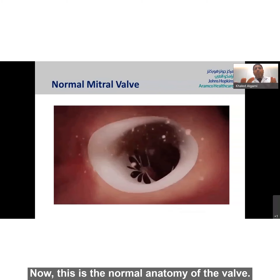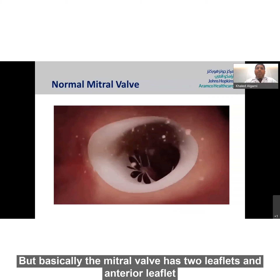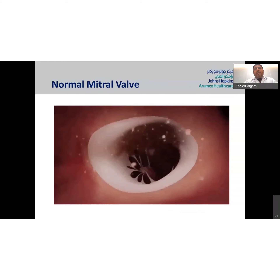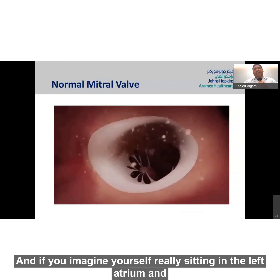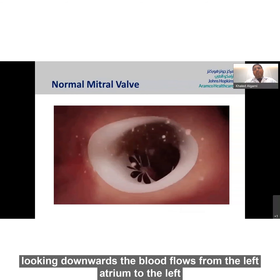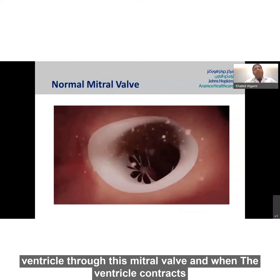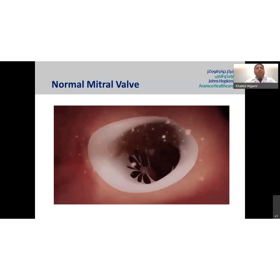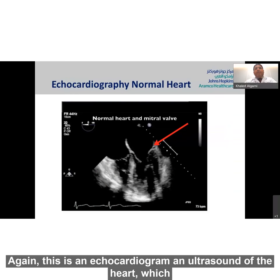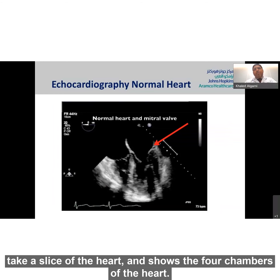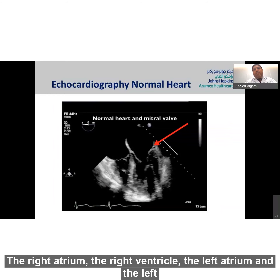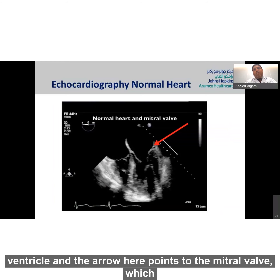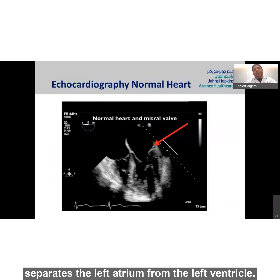This is the normal anatomy of the mitral valve, which has two leaflets: an anterior leaflet and a posterior leaflet. If you imagine sitting in the left atrium and looking downwards, blood flows from the left atrium to the left ventricle through this mitral valve. When the ventricle contracts, the mitral valve should close and prevent any regurgitation. This is an echocardiogram — an ultrasound of the heart — which shows the four chambers: the right atrium, right ventricle, left atrium, and left ventricle. The arrow here points to the mitral valve, which separates the left atrium from the left ventricle.